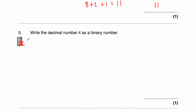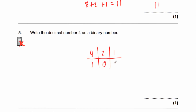Let's have a look at question five. In question five we've been asked to write the decimal number 4 as a binary number. Let's write our table: 1, multiply by 2 is 2, multiply by 2 is 4. We've got 4, 2, and 1 as columns. To write 4 in binary, we use one 4, and we don't need any 2s or 1s. So the number 4 in binary would be 100.